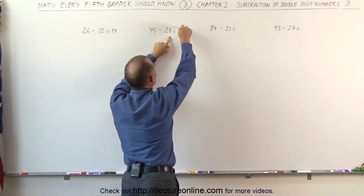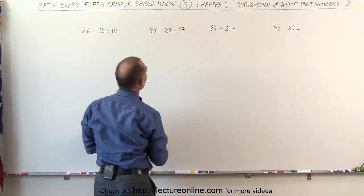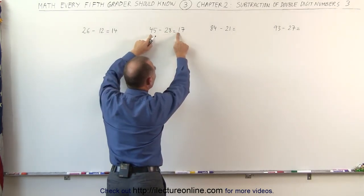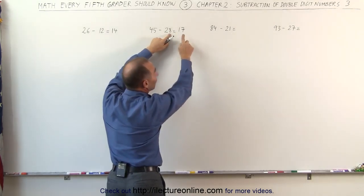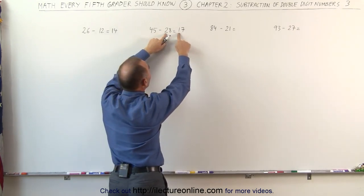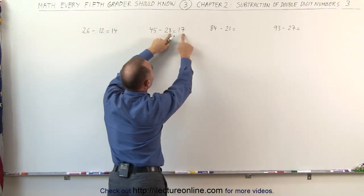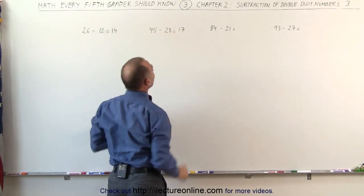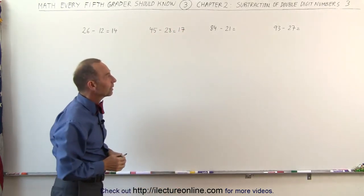Again, quickly to check to see if I did it correctly. 2 plus 1 is 3, which is not 4, but I realize that 8 plus 7 gives me more than 10. So I add one more to the 2 plus 1, it gives me a 4. And 8 plus 7 is 15. The 10 is given away. The 5 remains, which gives me the 5 over there. So I did it correctly.